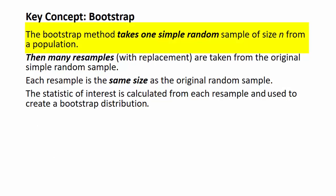So the key idea of bootstrapping is that we take one simple random sample from a population. We then take many samples of this sample with replacement, and then we calculate a statistic with each sample that we take. We calculate a statistic of interest and then use that to generate what we call a bootstrap distribution.